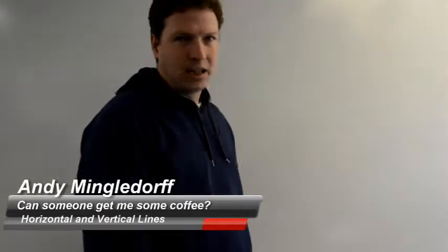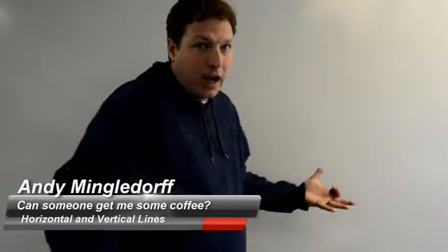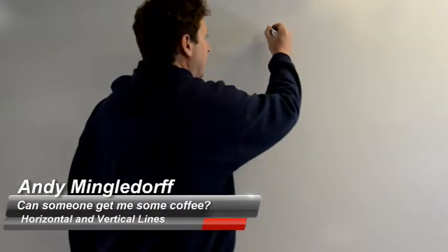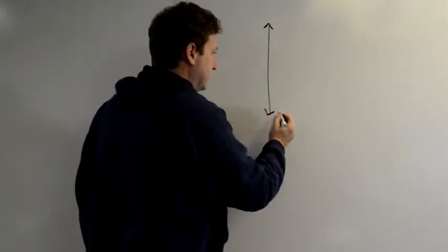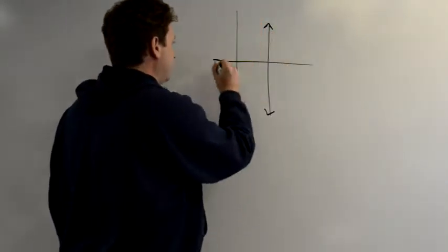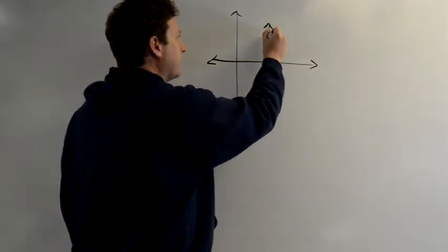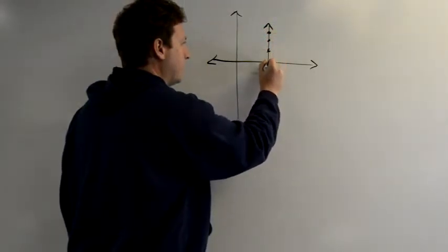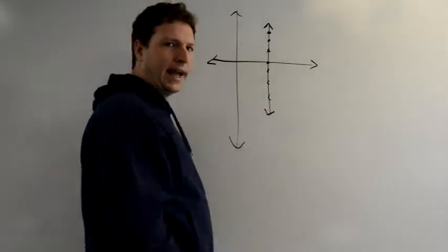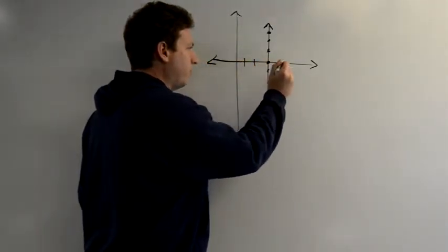The equations of horizontal and vertical lines look a little different. They're actually really easy though. We have a vertical line like this. If we were looking at this on a coordinate plane, what do I notice? I notice that my x values are all the same.